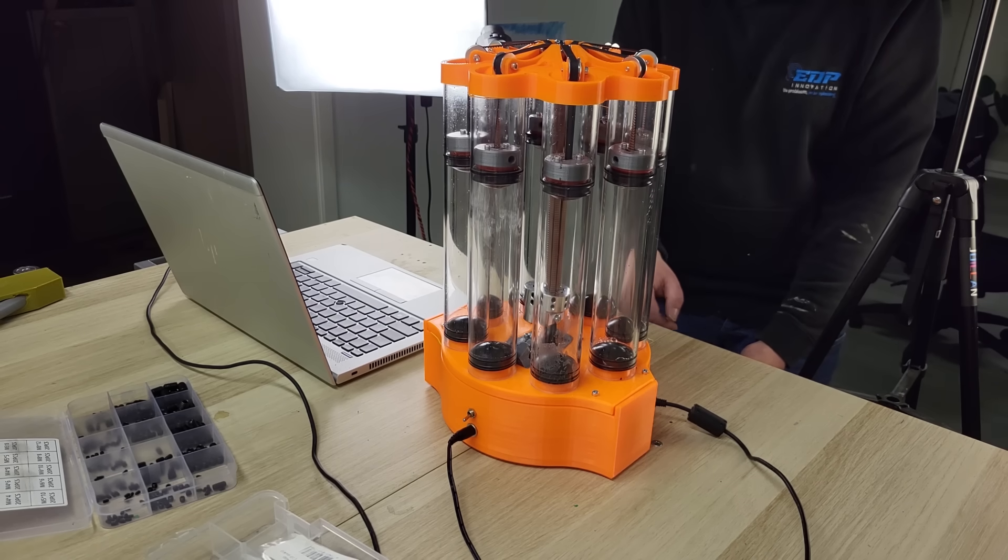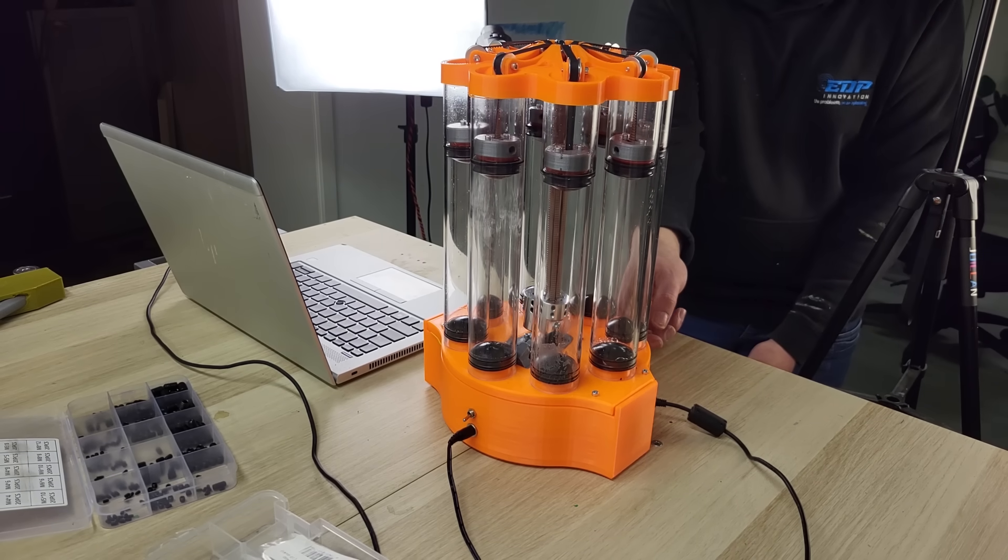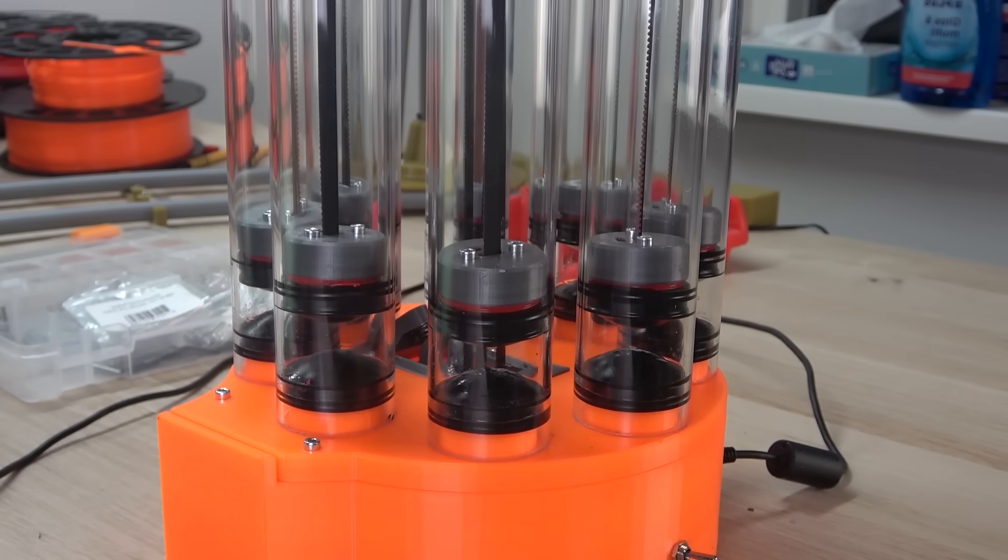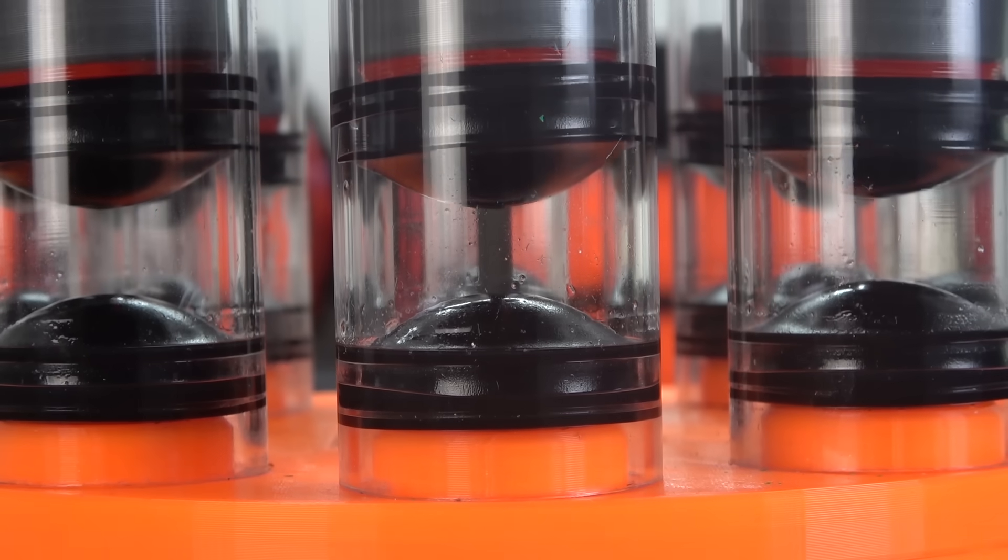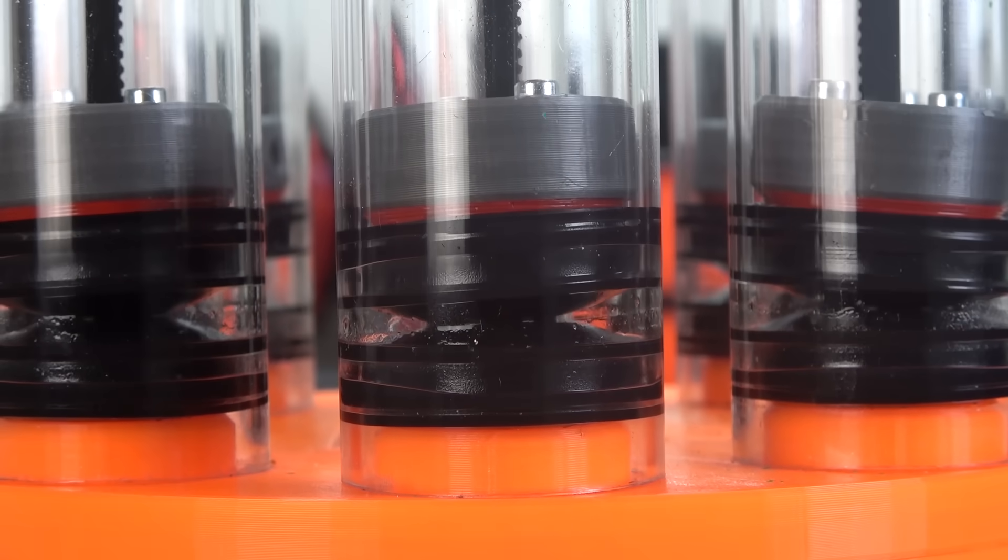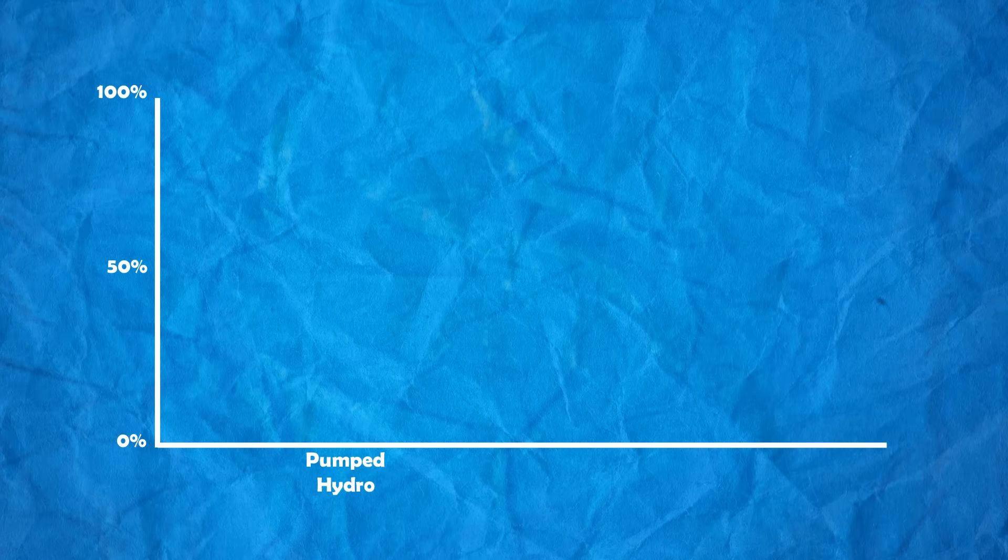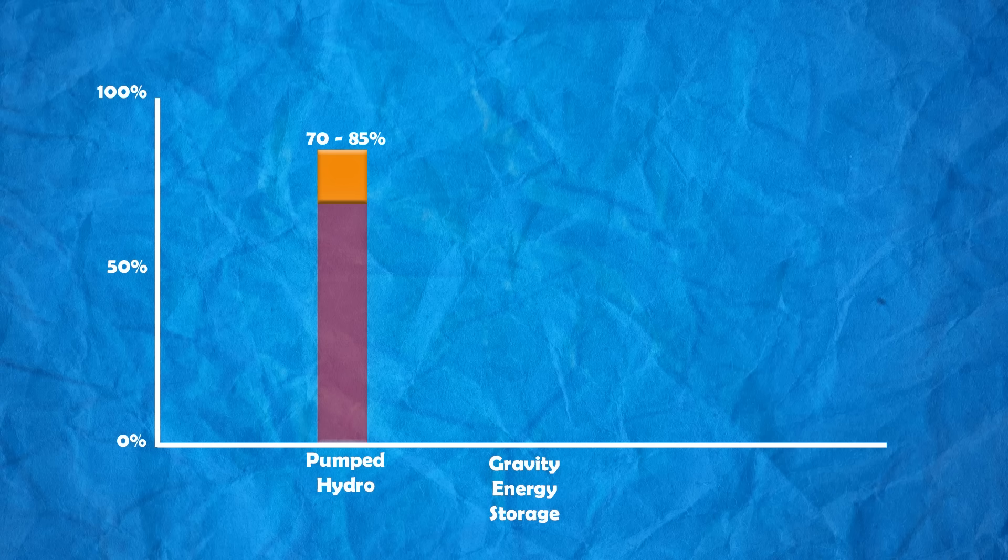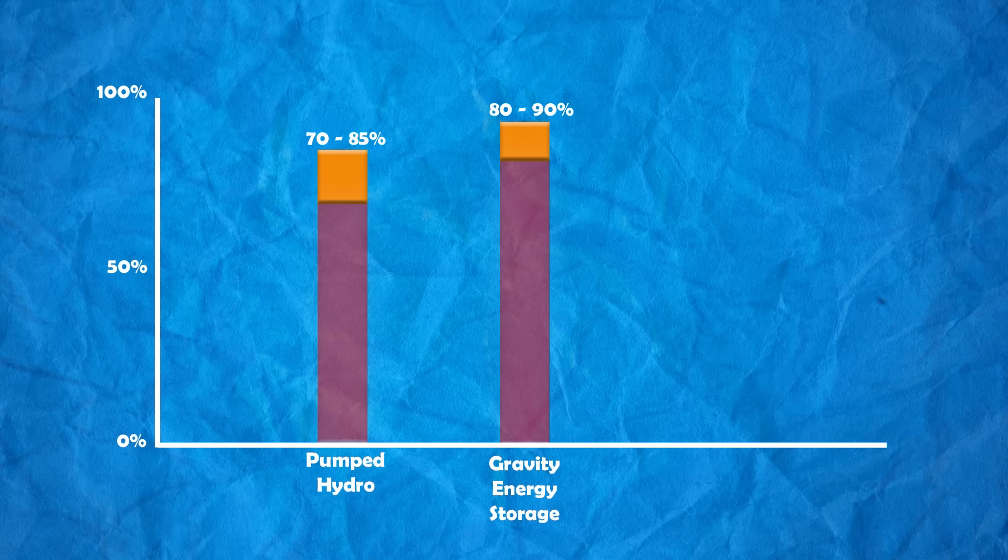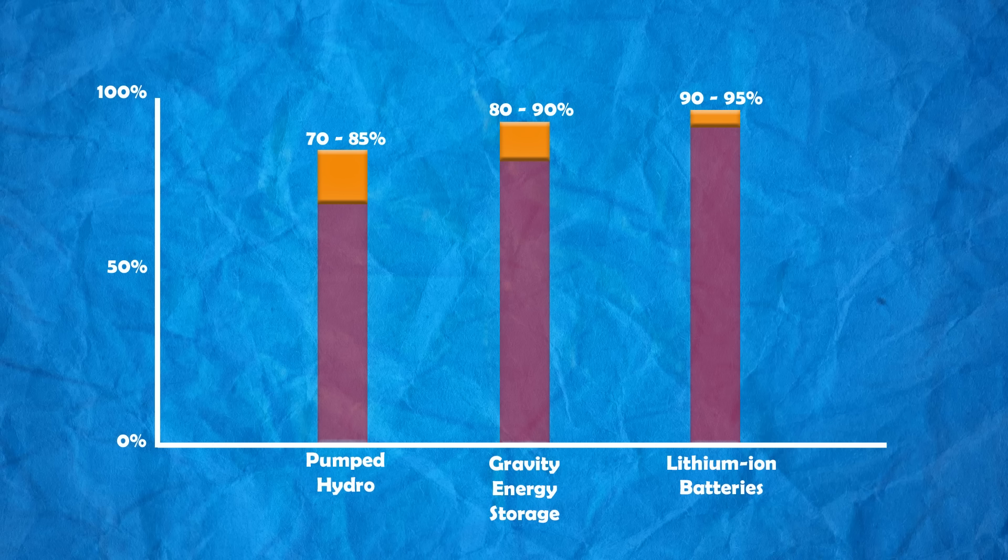To measure the efficiency of our vacuum battery we will need to compare the power needed to charge the battery to the total amount of power it will have generated after a full discharge. But before we do that let's look at the efficiency of some other ways to store energy like pumped hydro. Another popular way to store energy on a large scale which has an efficiency between 70 and 85 percent. Next gravity energy storage what this whole project is actually based on which has an average efficiency of 80 to 90 percent. And finally conventional lithium ion batteries which on average have an efficiency between 90 and 95 percent.